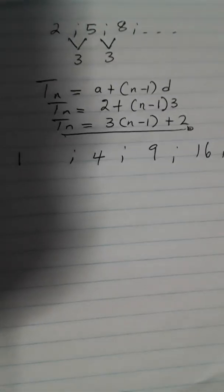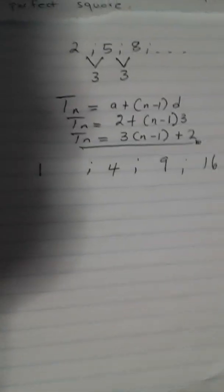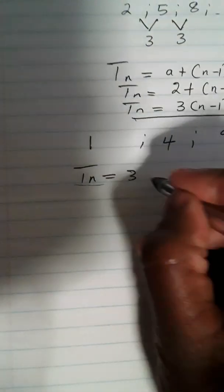From this general formula, from this linear sequence, let us divide this linear sequence by 3 and check the remainder. We will also divide each of these perfect squares by 3 and check the remainder. If the remainders are different, it means no term in this sequence will be a perfect square. But if the remainders are the same, there might be a term that could be a perfect square.